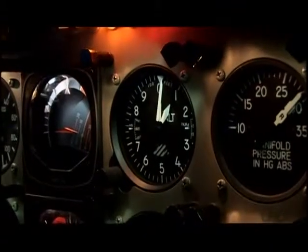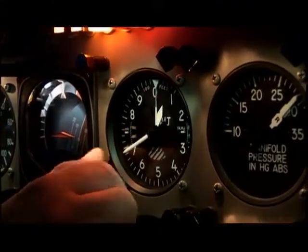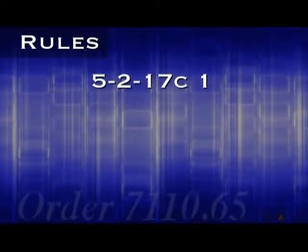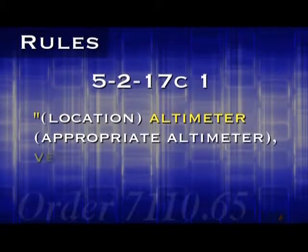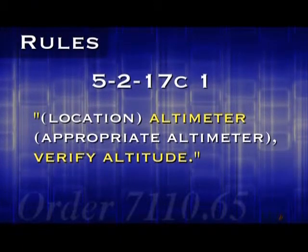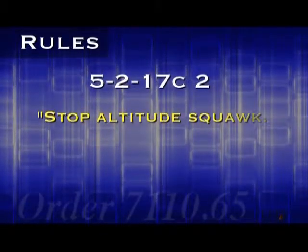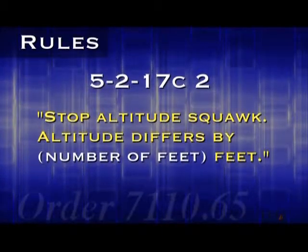One reason an altitude readout might be invalid is that the pilot may have the incorrect setting on his or her altimeter. If there is a discrepancy between the mode C and pilot reported altitude, the 7110 requires that you have the pilot check the correct altimeter by saying the location of the reporting station, such as Academy, Altimeter, and then the appropriate altimeter setting, Verify Altitude. If this does not resolve the discrepancy, you must have the pilot turn off their mode C altitude reporting by saying, 'Stop altitude squawk, altitude differs by' and then the number of feet followed by the word feet.